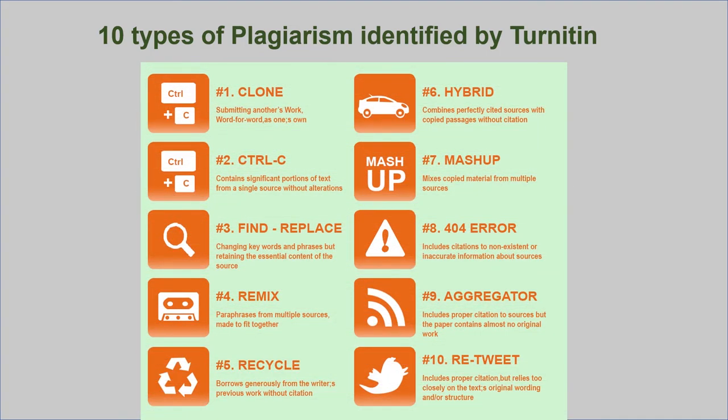Let us move towards a more modern classification of plagiarism. A very famous plagiarism checking website is Turnitin — we will talk about it when we discuss plagiarism checking software. Turnitin published a white paper and a spectrum called the Plagiarism Spectrum, in which they discussed 10 types of plagiarism: Clone, Control C, Find Replace, Remix, Recycle, Hybrid, Mashup, 404 Error, Aggregator, and Retweet. Recently, they revised it and are now talking about 12 types. Let us discuss what these 10 types are.